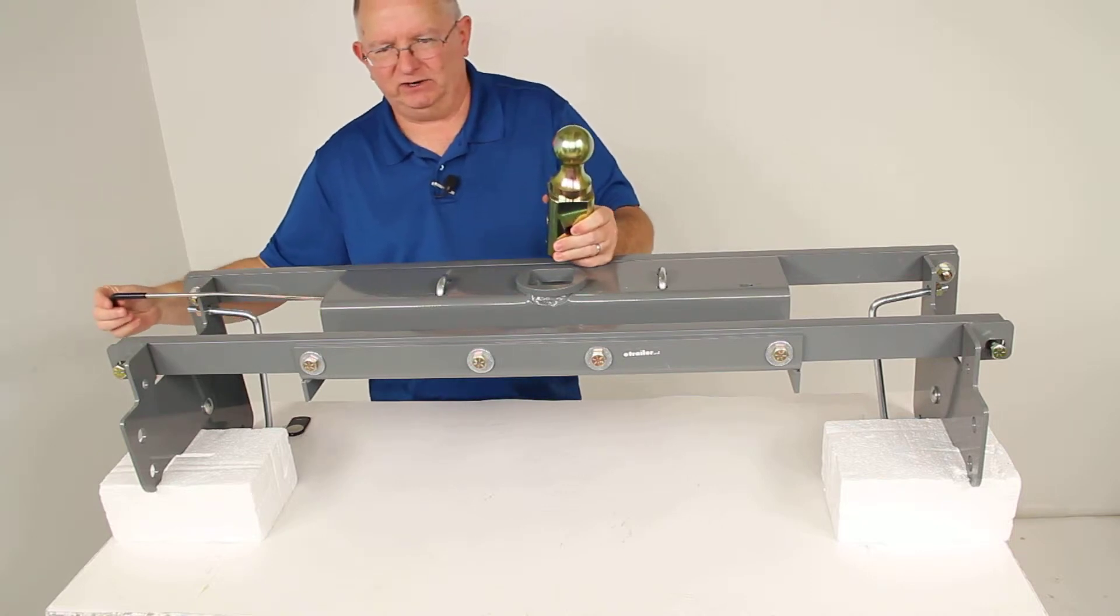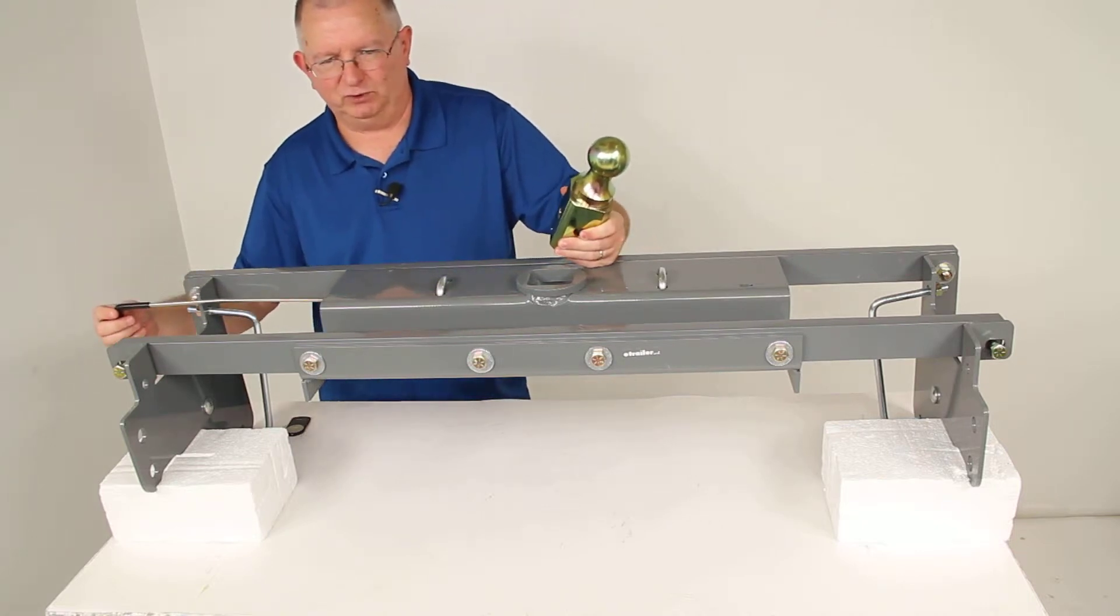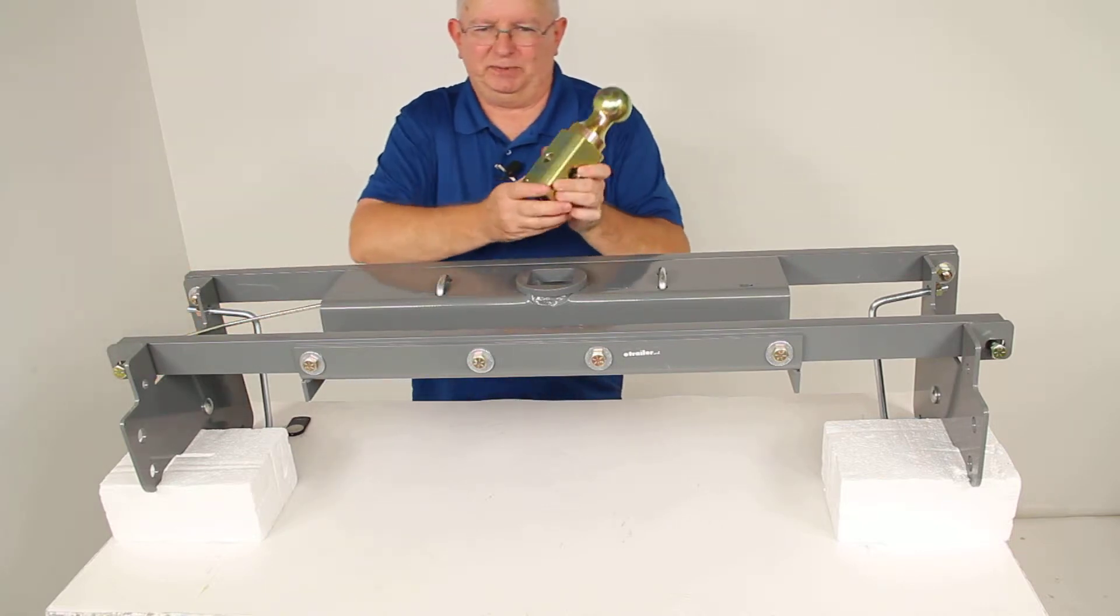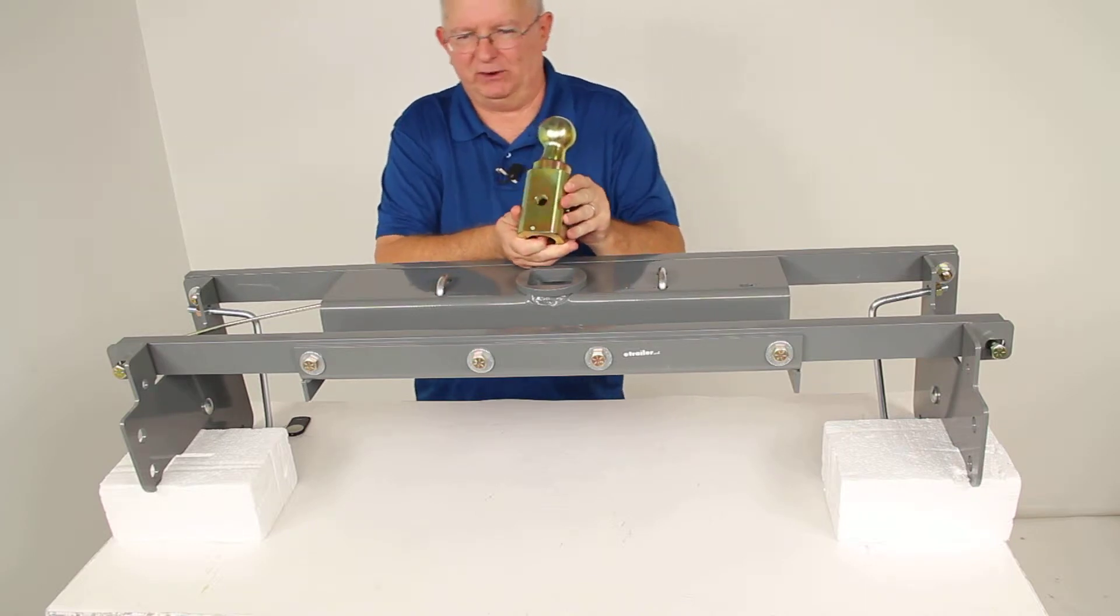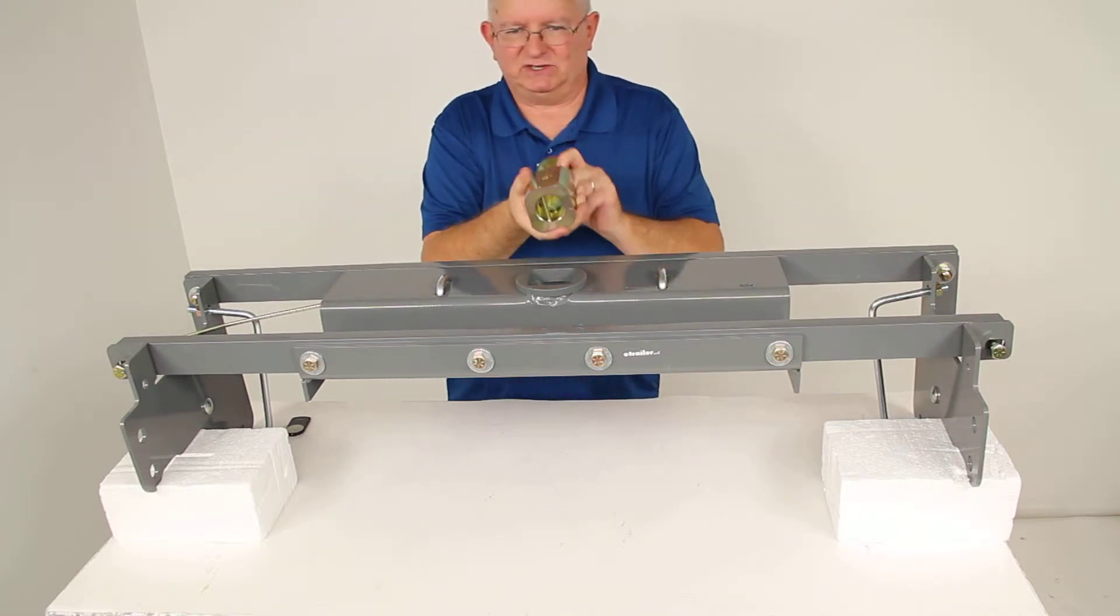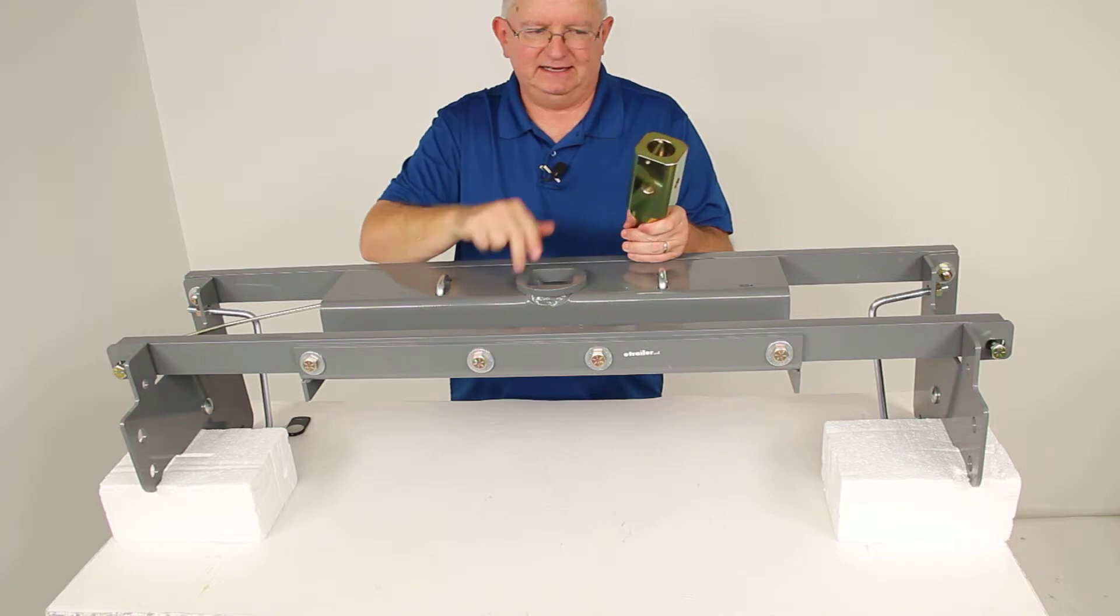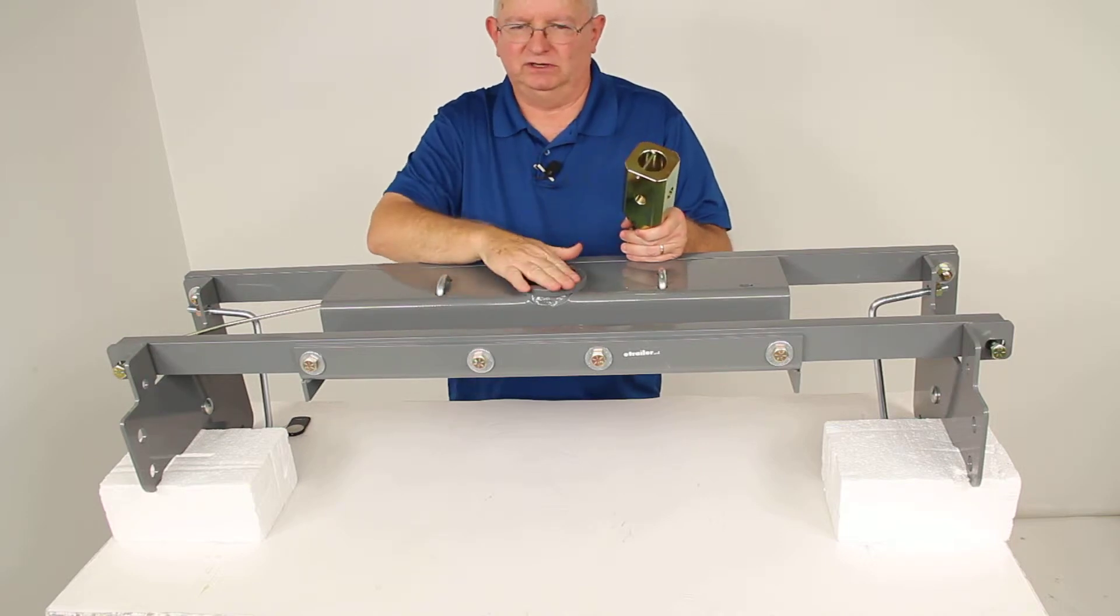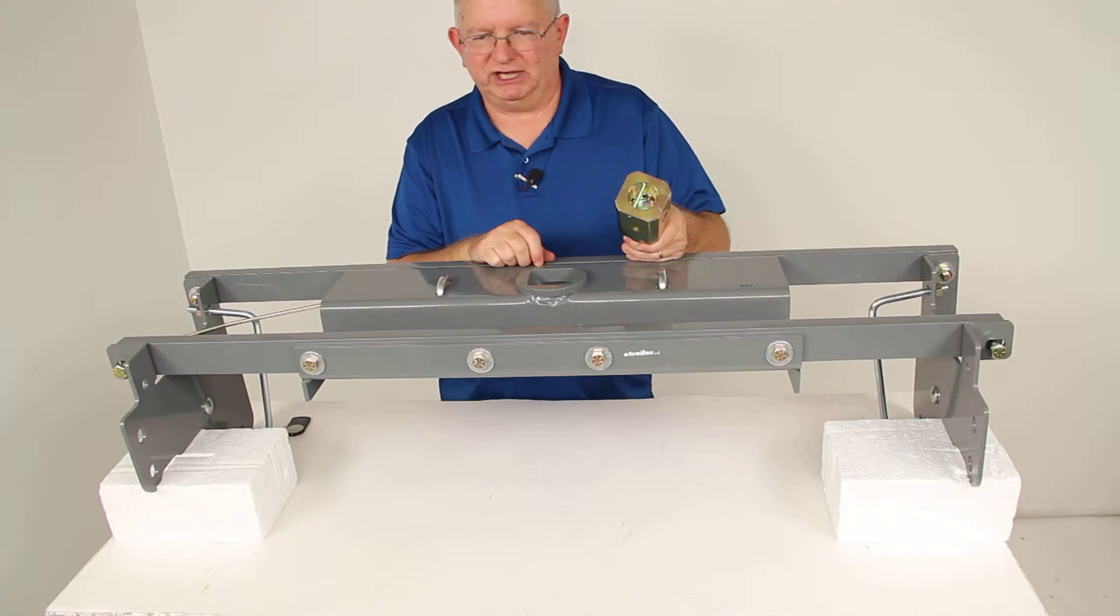This access handle right here will be at your rear driver's side wheel well. This single-piece machine ball socket provides rugged durability. It has a square ball base right here that will prevent the ball from turning in the hitch during hookup.